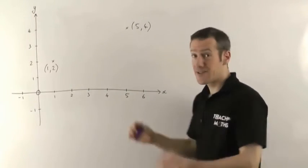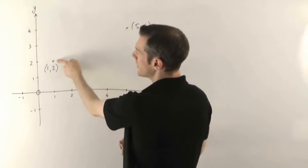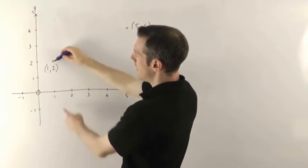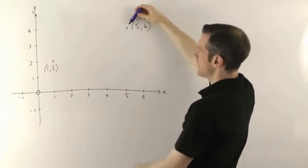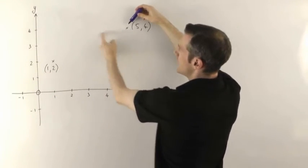Alright here's our set of axes and I've stuck a couple of points on here so we've got one point here with coordinates at 1,2 and this one here is at 5,4.